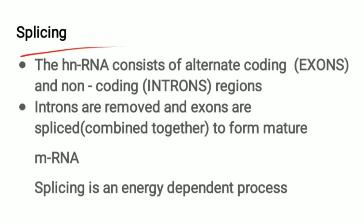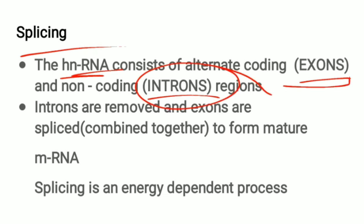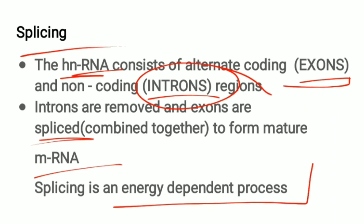Then there is splicing. The hnRNA consists of both coding and non-coding regions — the coding region is known as exons and the non-coding region is known as introns. All introns are removed and the exons are joined together; this joining is known as splicing. Splicing of exons to form the mature RNA is an energy-dependent process.